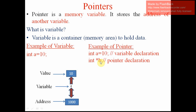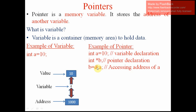After the asterisk we have to give the variable name, then a semicolon. Now the variable 'b' is a pointer variable — it can store the address of another variable. My aim is to store the address of 'a' into 'b'. What is the address of 'a'? It is 1000. So I am going to assign b = &a. The ampersand (&) means address — you may remember in scanf we use the ampersand with a variable name to store the address of that variable. Here I am storing the address of 'a' into 'b'.